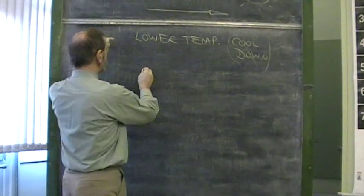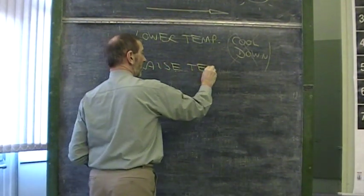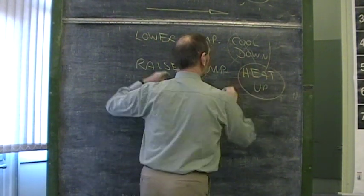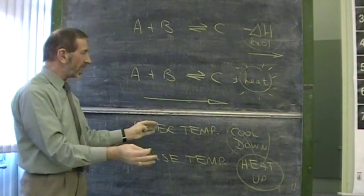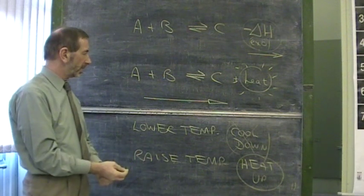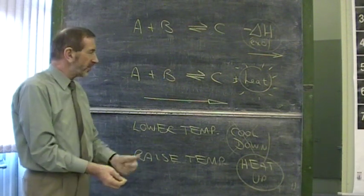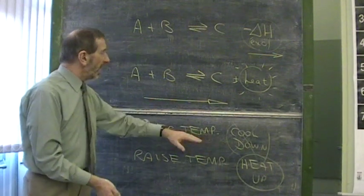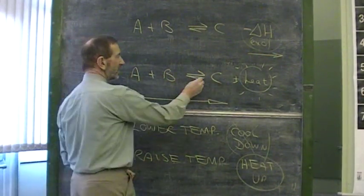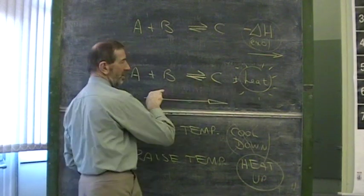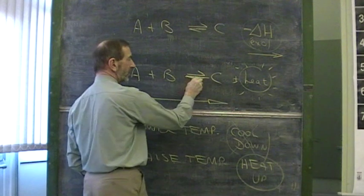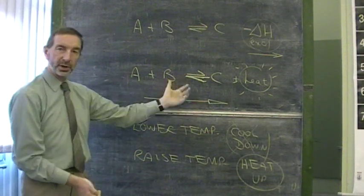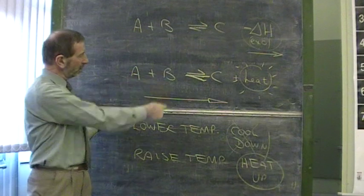Look at it the other way. Imagine if we were to raise the temperature - heat it up. The reaction is sitting there at equilibrium, and we heat it up. It doesn't want to be heated up; it wants to get rid of the extra heat. The direction which gets rid of heat is to the left. This reaction in the forward direction produces heat, whereas the reverse reaction gets rid of heat. So if you were to heat this up, it would shift to the left in order to get rid of heat.